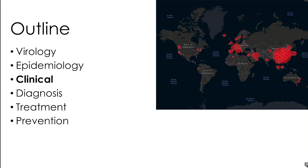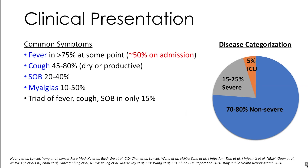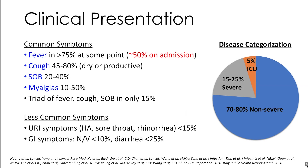Turning to the clinical manifestations of COVID-19: most cases, about 70-80%, are non-severe; 15-25% are severe; and 5% require ICU-level care. The most common symptoms are fever, cough, shortness of breath, and myalgias. Fever is present in most patients at some point, but only 50% on admission — so the absence of fever does not exclude COVID-19. The triad of fever, cough, and shortness of breath is found in only 15% of patients. Less common symptoms include URI symptoms such as headache, sore throat, and rhinorrhea in less than 15%, and GI symptoms where nausea/vomiting is seen in less than 10% and diarrhea in less than 25%.